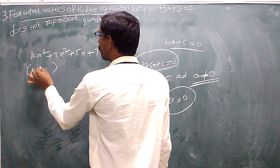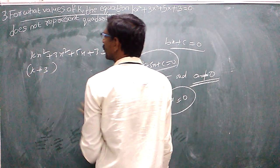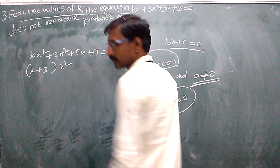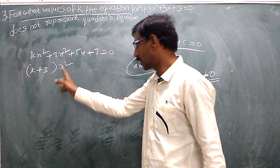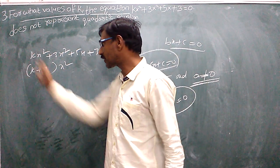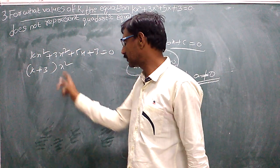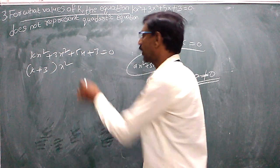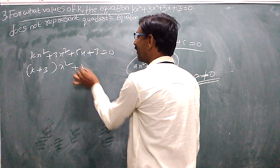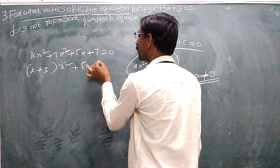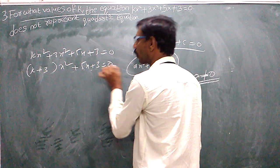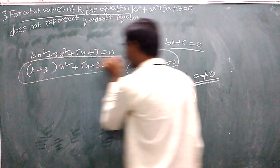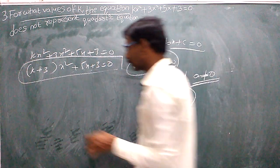So we set k plus 3 equal to 0. The equation becomes 0 times x squared plus 5x plus 3 equals 0. This does not represent a quadratic equation.